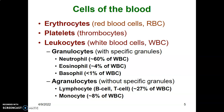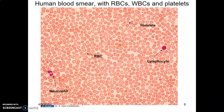Agranulocytes do not have granules. We have lymphocytes — two types, B cells and T cells, although we also have natural killer cells — these are 27 percent of the white blood cells. We also have monocytes, which are approximately eight percent of white blood cells. This is how you classify blood cells.